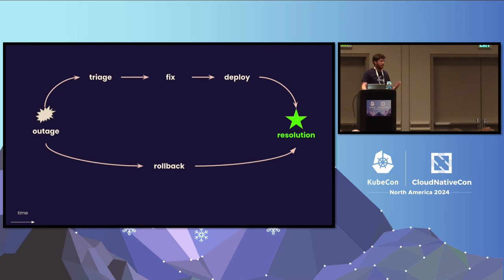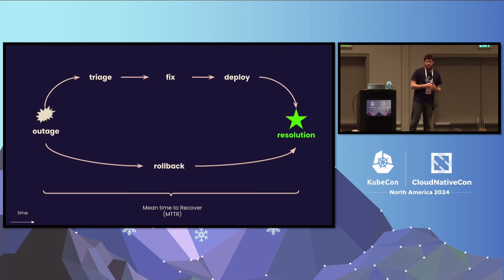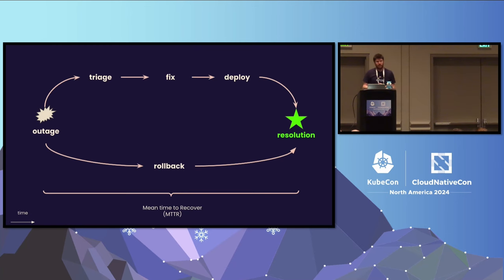Whatever path your team chooses, the average time it takes to recover from a production outage is called the MTTR, and it's a very important metric if you want to provide a reliable service to your customers.